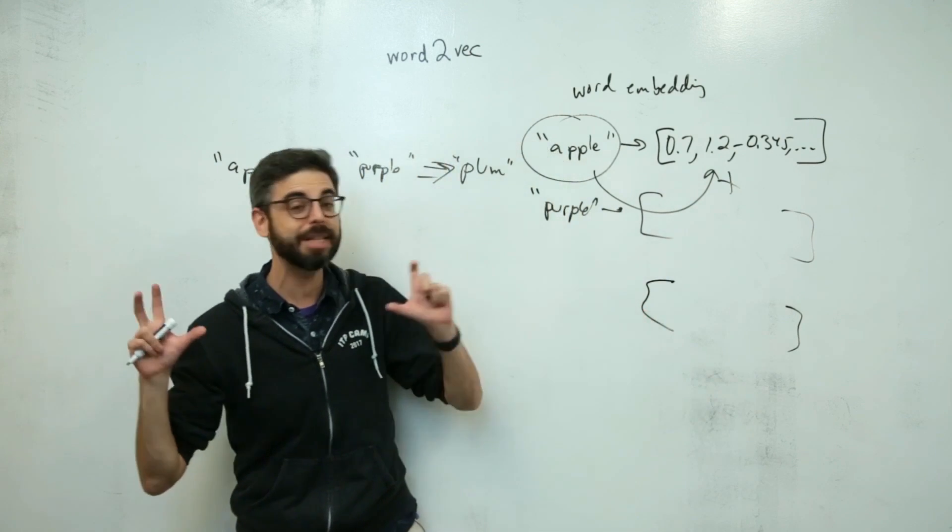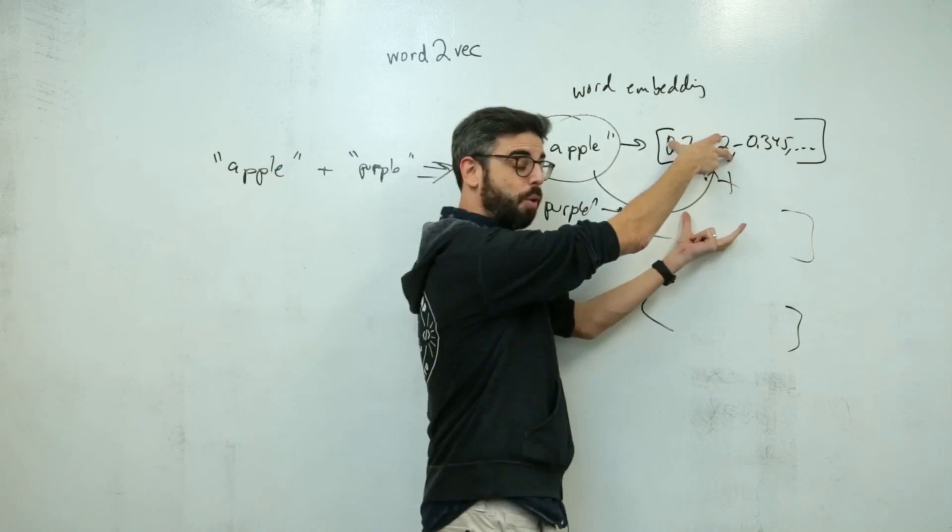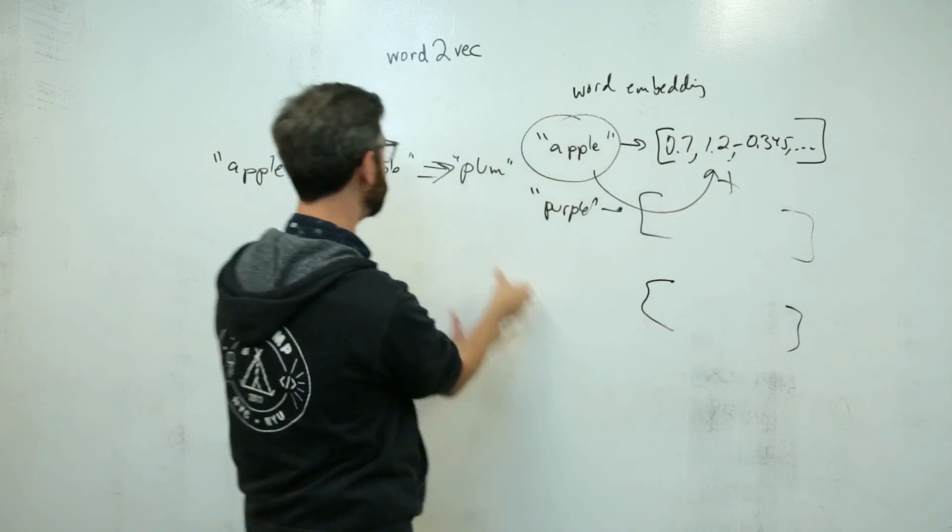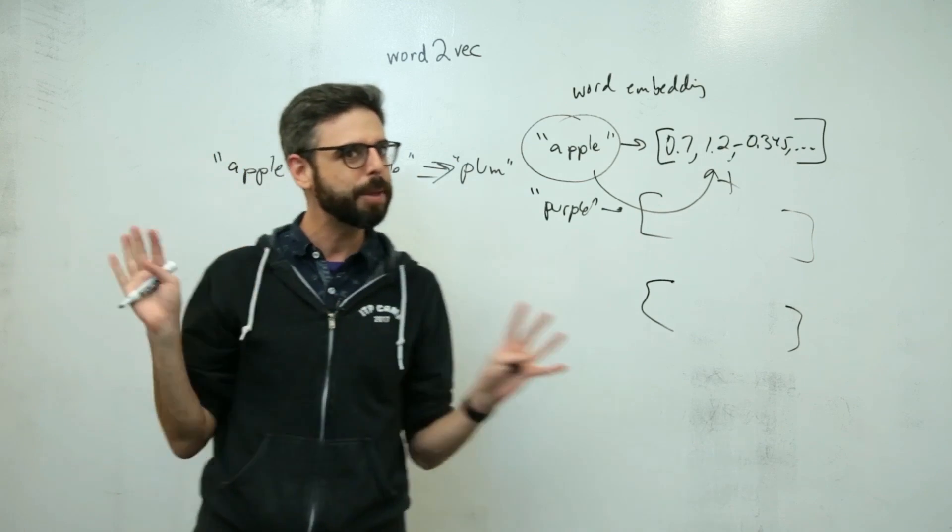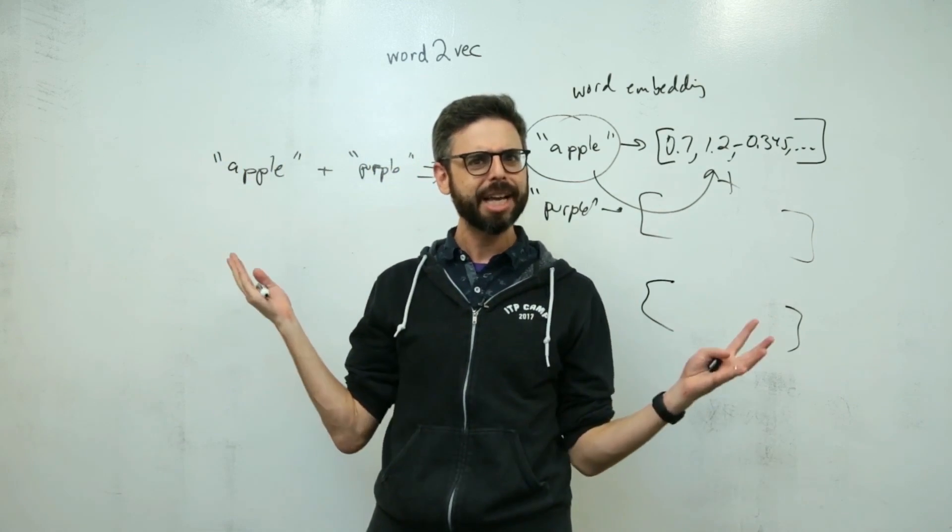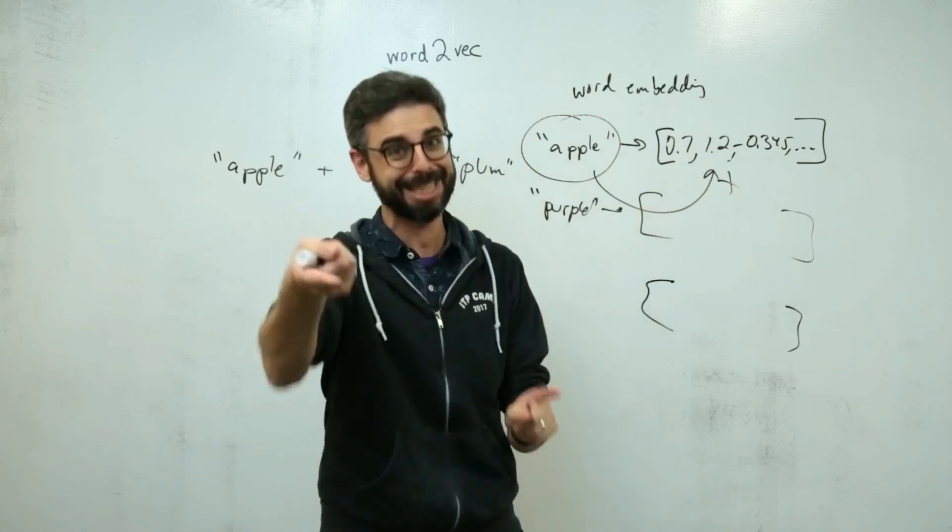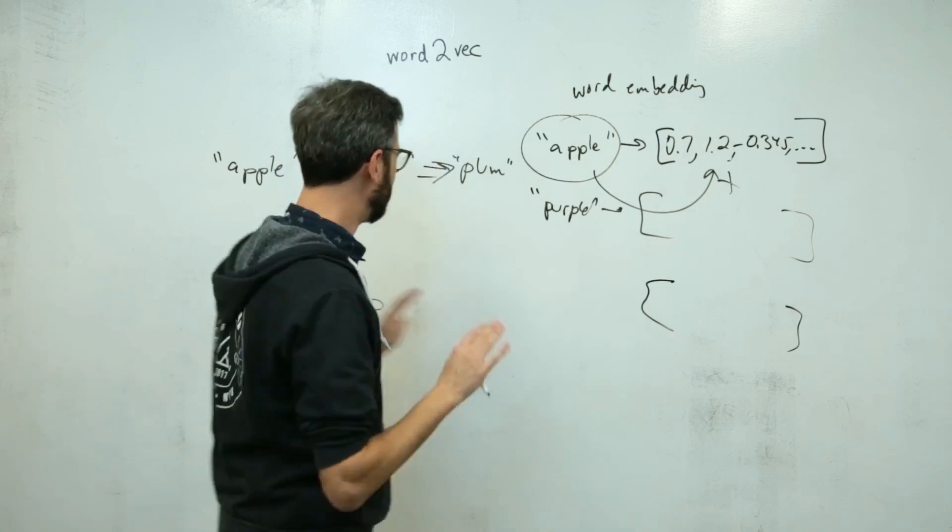How could I find the similarity? I could calculate a similarity score between any two sets of numbers. I could find the word that has the most similar to this plus this, and maybe it would be plum. Why would it be plum? Is that magic? Is it because of what data that Word2Vec model is trained on? Well, yes, it's the latter, but I want to get to all of that.